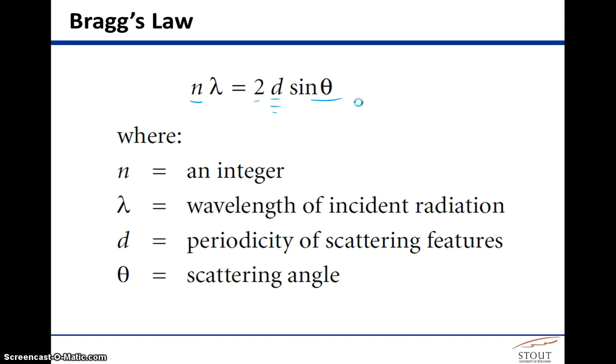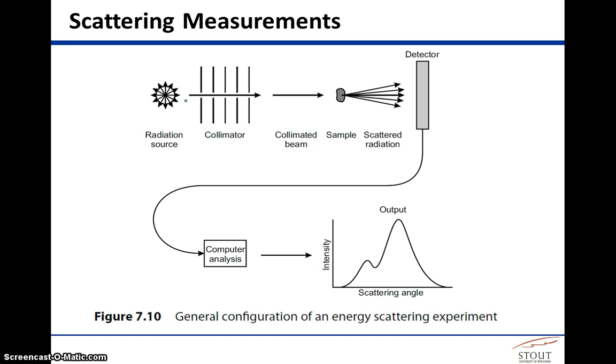And so how is this accomplished? Well, there's some radiation source. Let's say it's an X-ray source. The X-rays get collimated. They then go through the sample. And then because of the spacing that might be characteristic in that material, it will hit that spacing. And through constructive and destructive interference of the scattered material, you will get this...